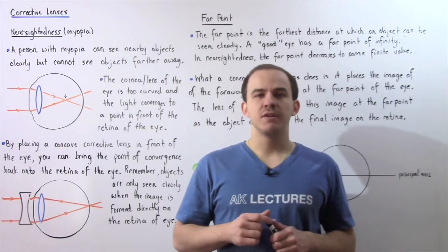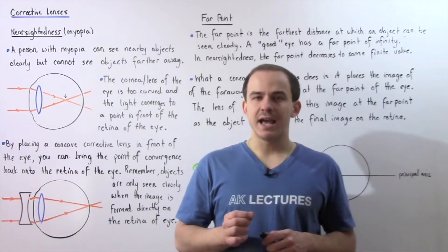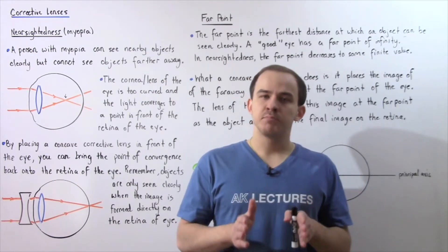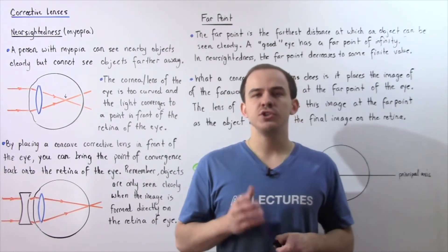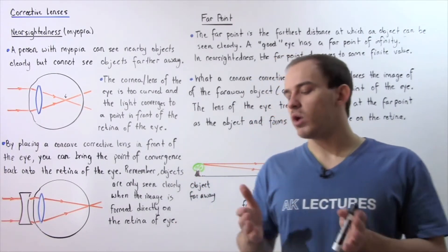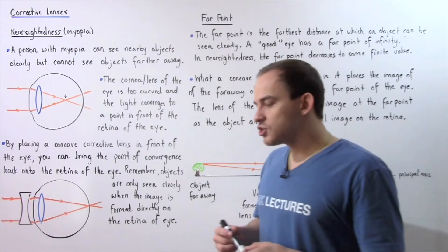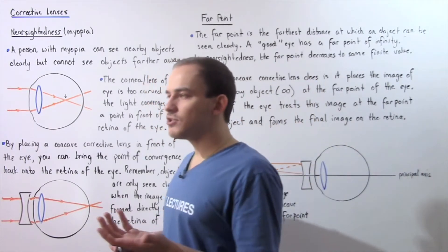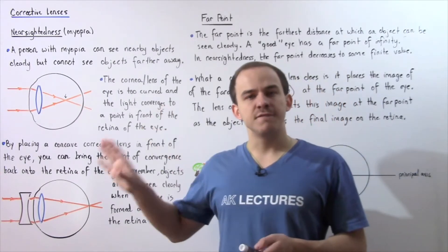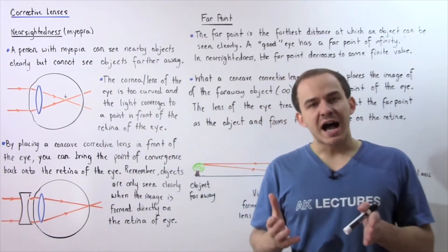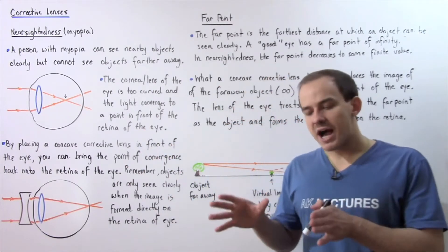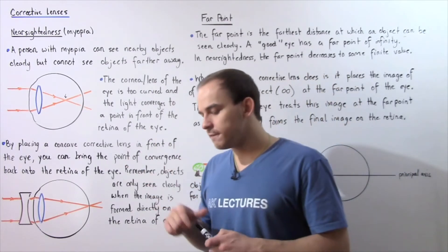Let's recall the condition of the eye known as nearsightedness or myopia, and let's examine how we can temporarily fix this condition using corrective lenses. Nearsightedness or myopia is essentially the inability of the eye to see objects very far away. The eye can still see objects very close, but cannot see objects very far away.